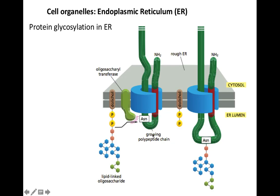During co-translational translocation, when a protein is being translocated through the translocon, as soon as the polypeptide chain grows into the lumen of the ER, an associated enzyme known as oligosaccharyl transferase transfers an oligosaccharide molecule onto the growing polypeptide chain. Next to this enzyme you have a dolichol molecule. Dolichols are generally long-chain, mostly unsaturated organic compounds.